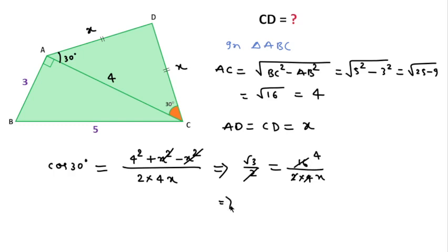So we write X equals 4 over root 3. After multiplying numerator and denominator by root 3, we can write 4 root 3 over 3. This is the answer for this question.